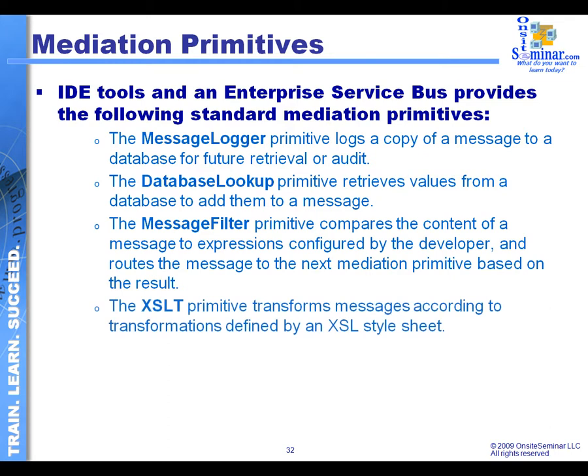There's an XSLT primitive when we want to do message transformation — we want to manipulate and modify messages using the transformation schema from an incoming or outgoing message. We have a very simple primitive that will do that for us. Most of these primitives appear in a transformation type of map that allows us to look at the input and output message and simply use drag and drop to create this.